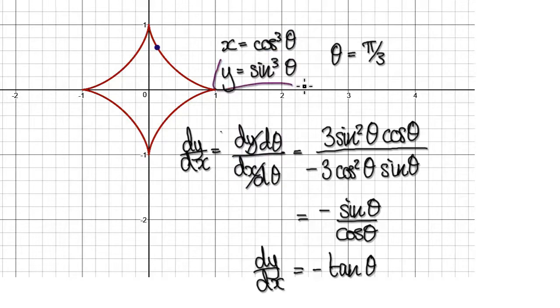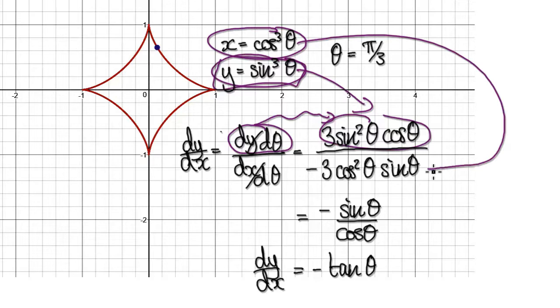So dy by dx would give us this. If you differentiate this, it would give you this. And then differentiate this, that would then give us this.